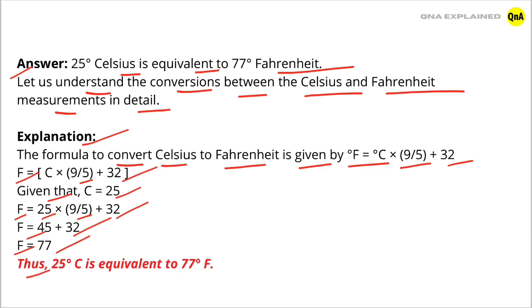Thus, 25 degrees Celsius is equivalent to 77 degrees Fahrenheit.